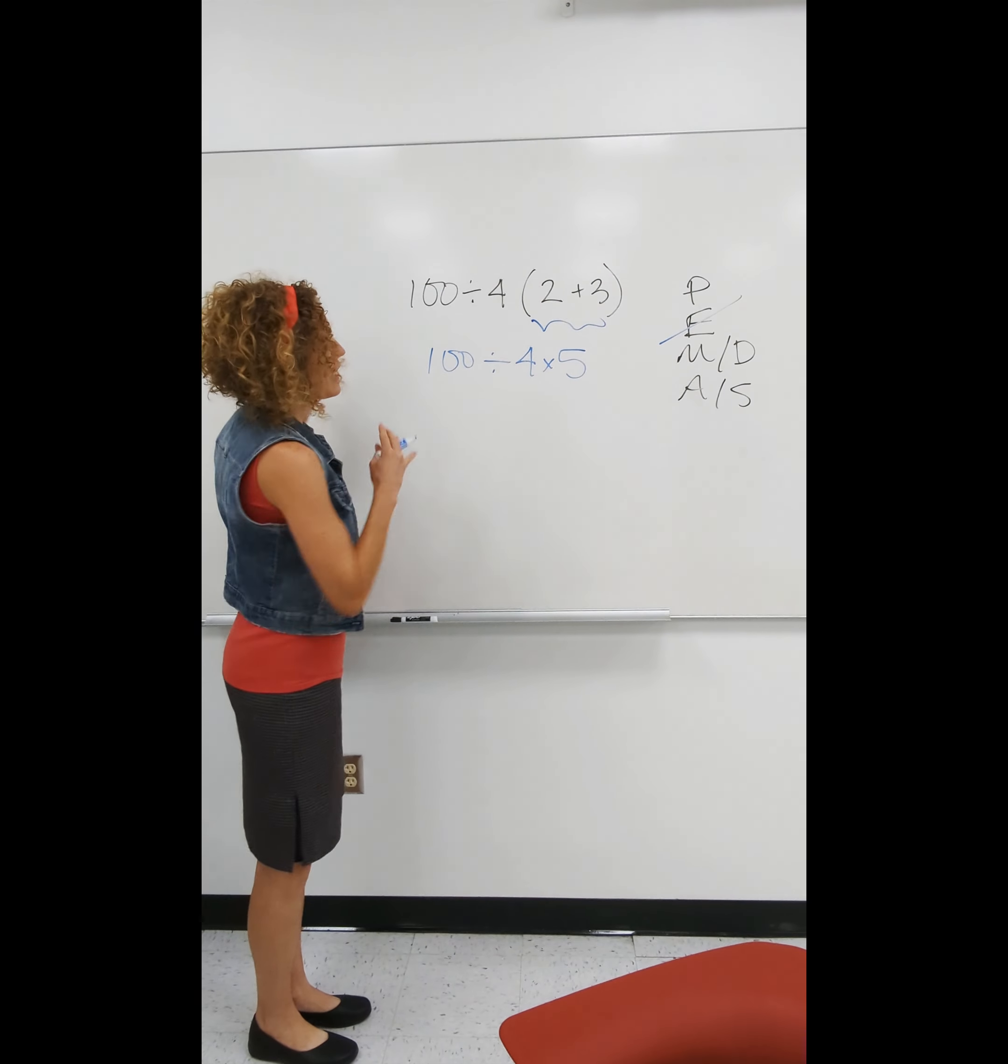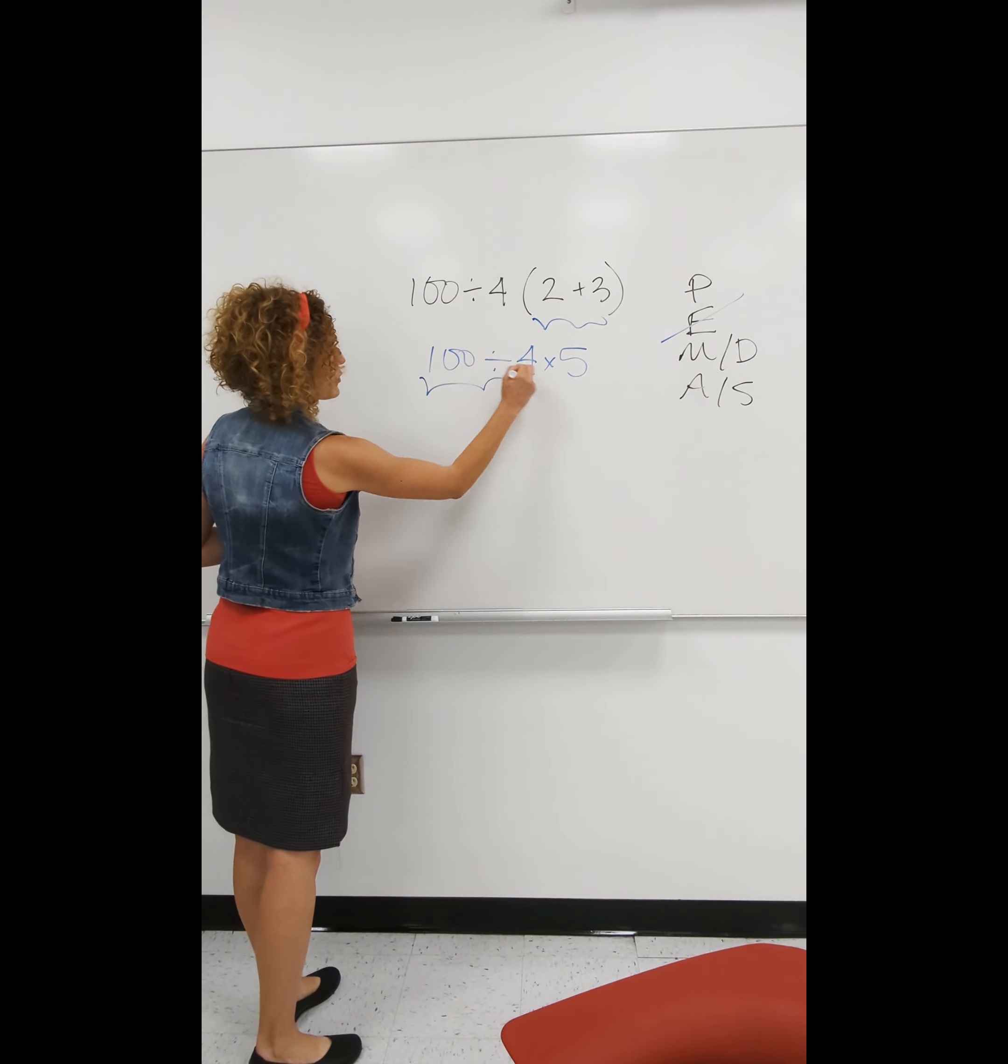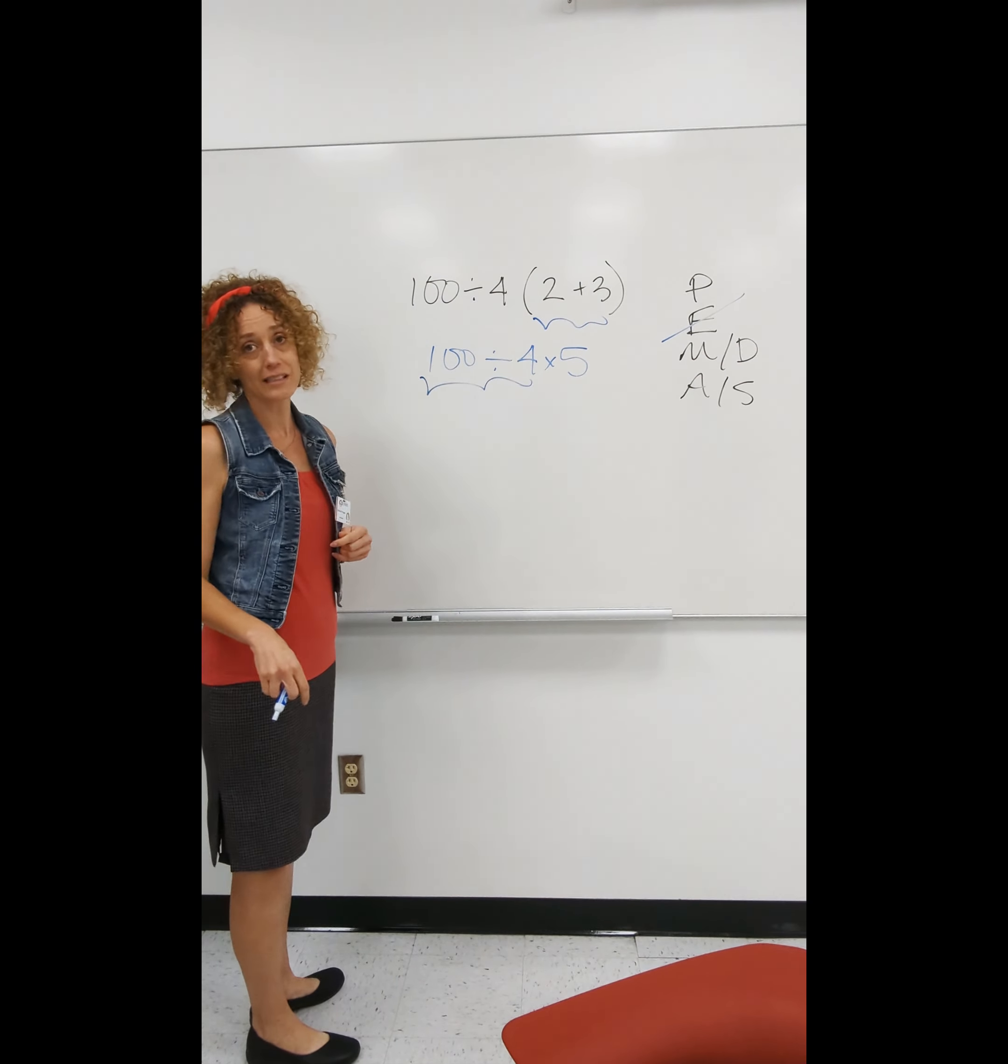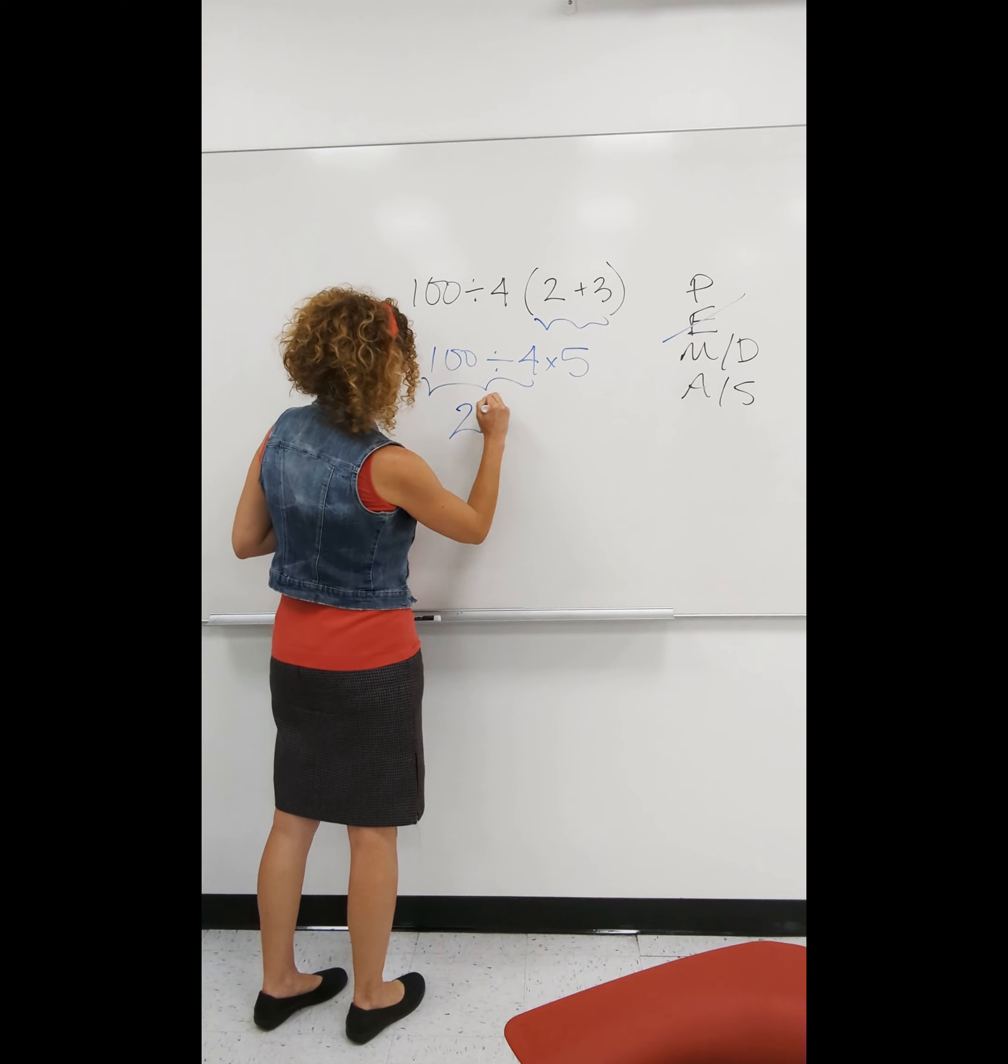Well, we should add here to get 5, since the 2 is in the parentheses there. So rewriting the problem, exponents are gone, now we're in this order.